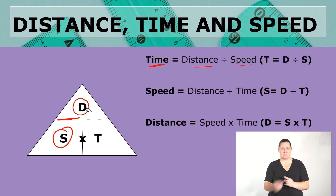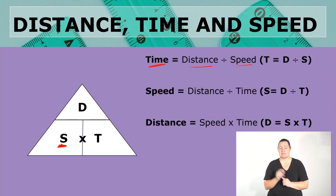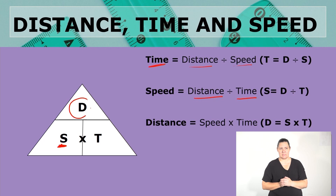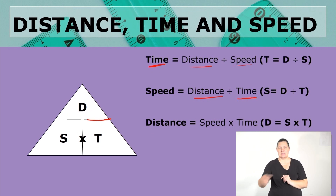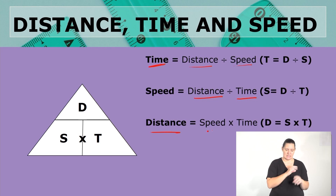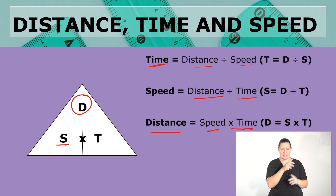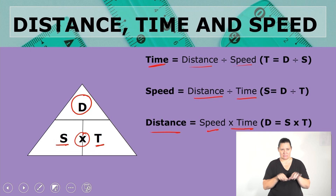Let's look at speed. Speed is this one, and the formula for speed is distance divided by time. Let us look at the last one, which is distance. Distance is speed multiplied by time. So this triangle we are going to use throughout the lesson just to find those formulas easier.